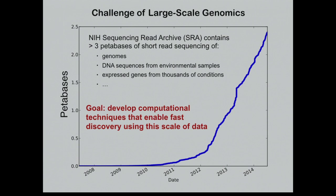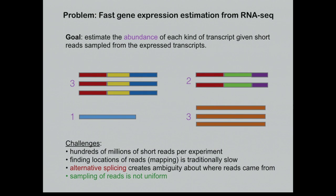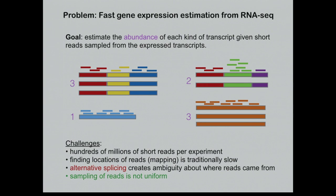One of the goals of my group is to develop computational techniques that enable fast discovery from data at this scale. For this talk, I want to discuss gene expression experiments and the challenge of estimating gene expression abundance from RNA-seq data — doing that quickly and accurately. The computational problem is that in your sample there exist some number of copies of various isoforms of a gene, present in certain particular abundances, and the goal is to estimate those abundances given samplings of short reads from the expressed transcripts. That's the gene expression quantification problem.